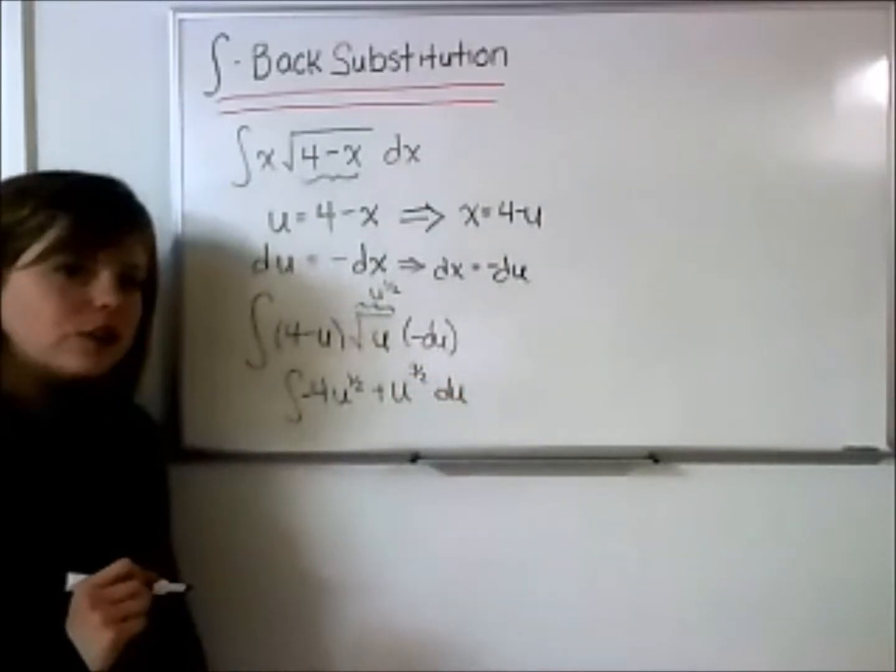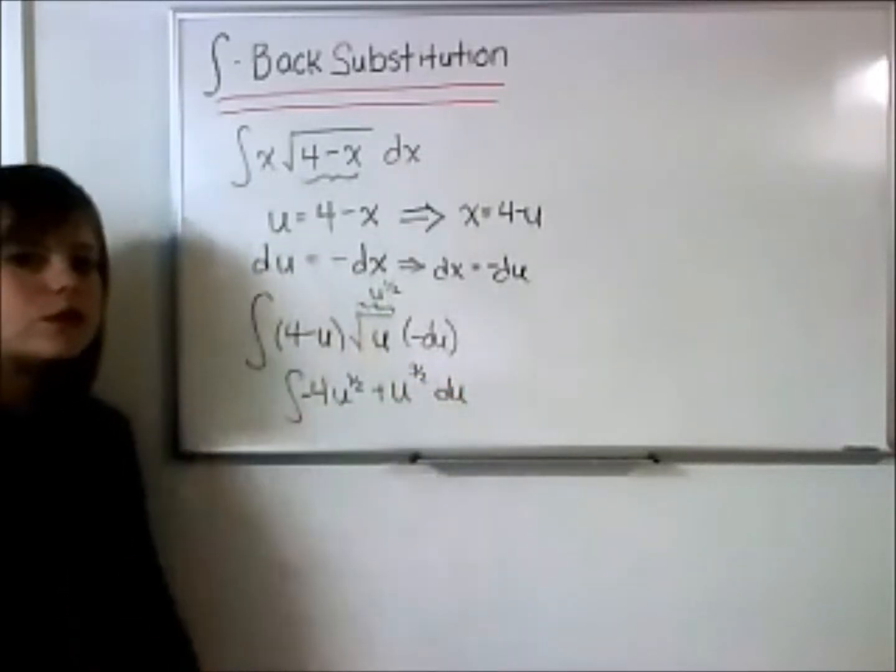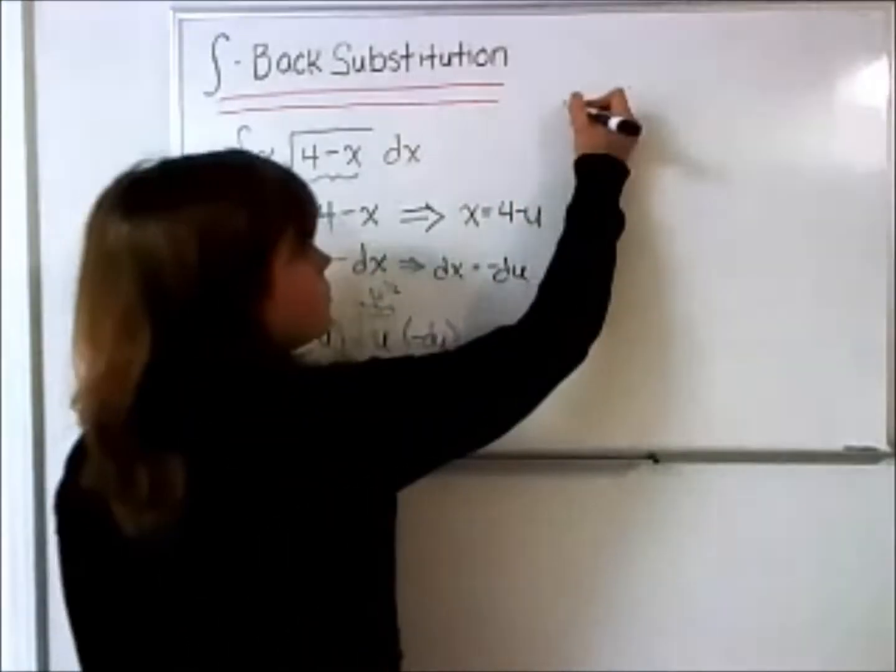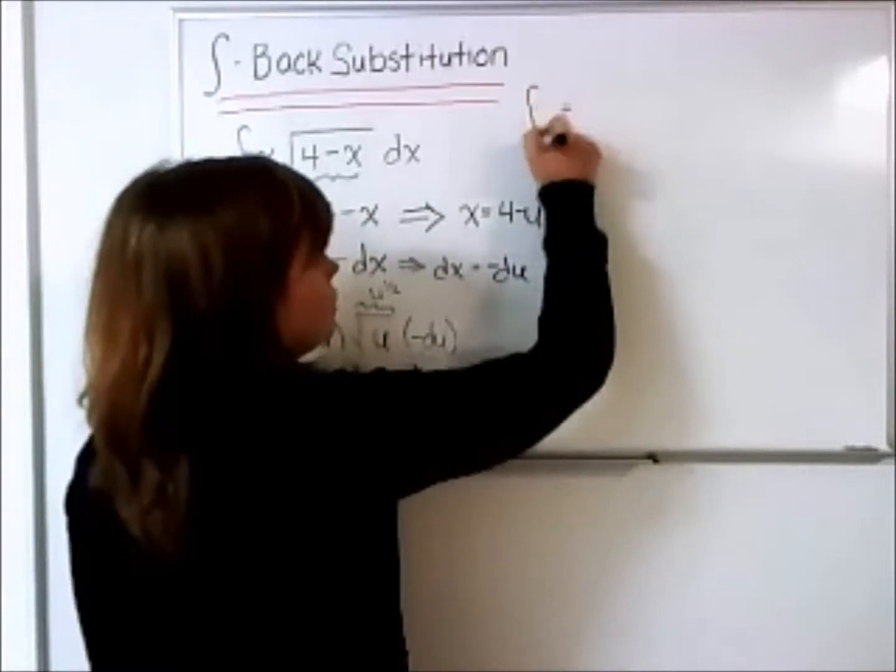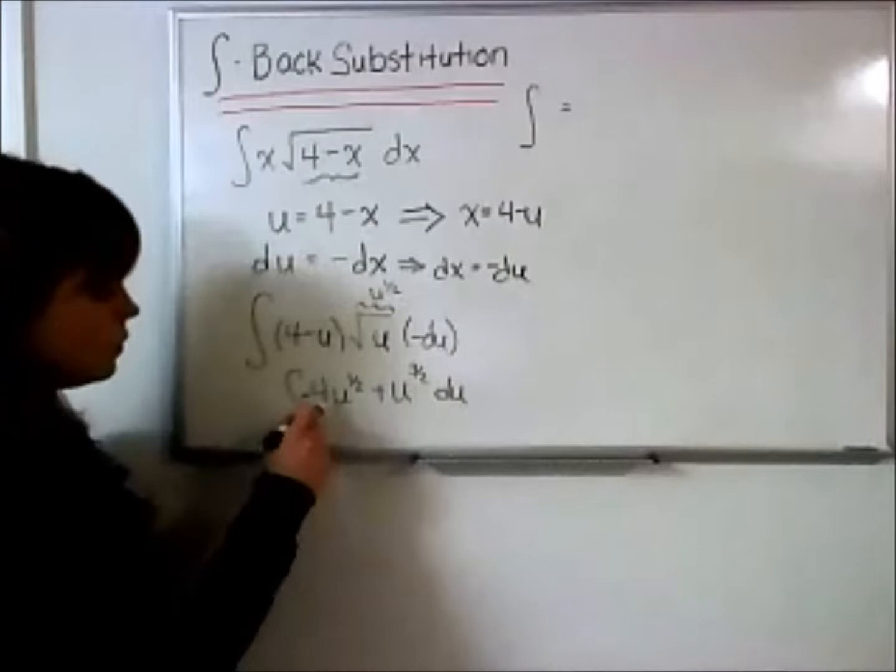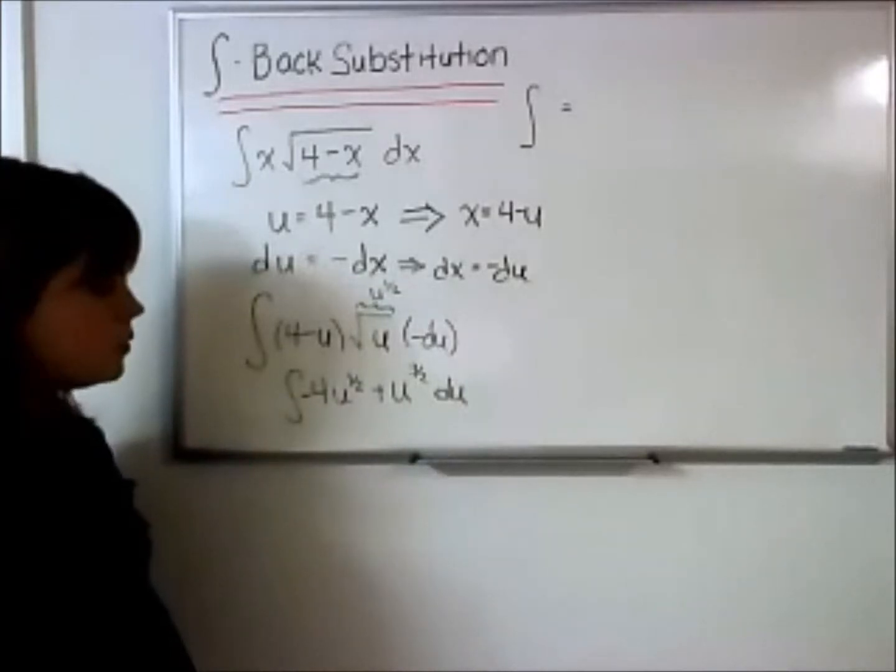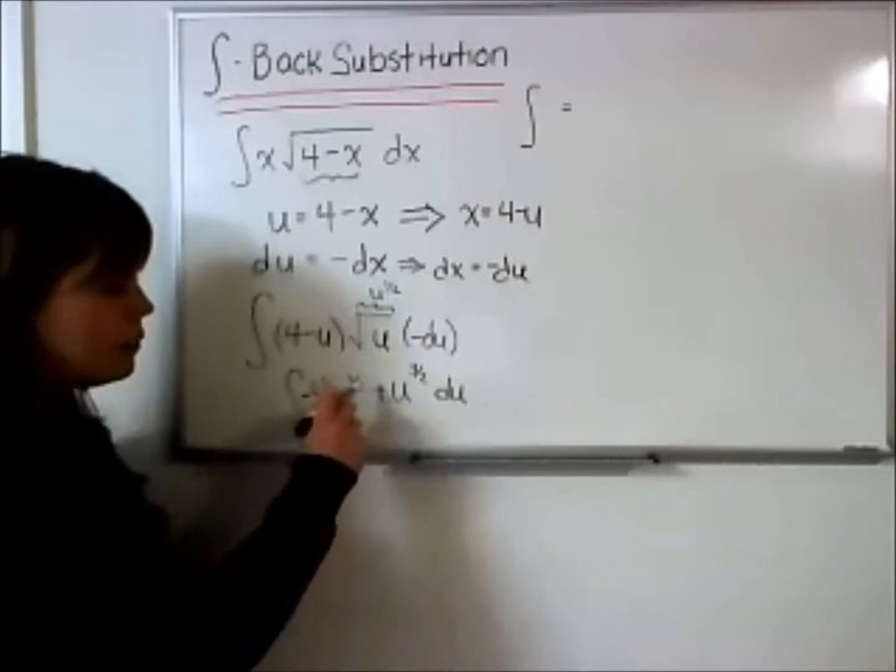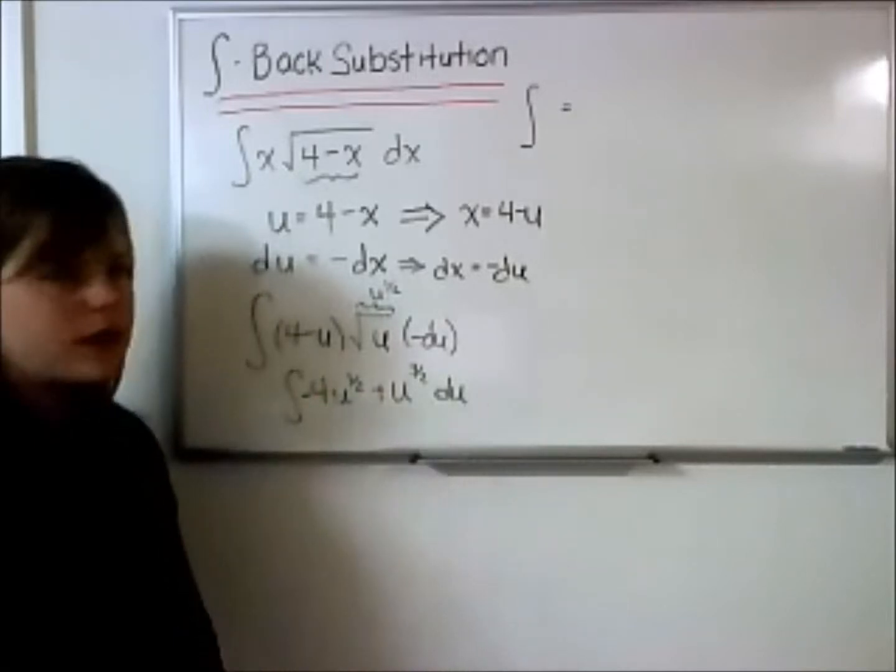So now we can actually use that reverse power rule to find the antiderivatives of each of these. So I'm going to move up here. We'll get our integral equal to. So the antiderivatives of u to the 1 half will be u to the 3 halves, so we're adding 1 all over 3 halves.